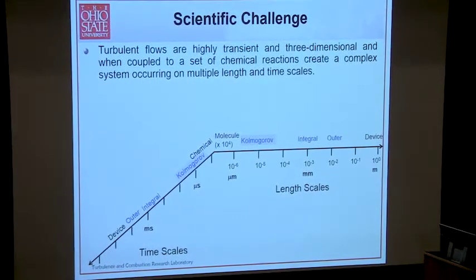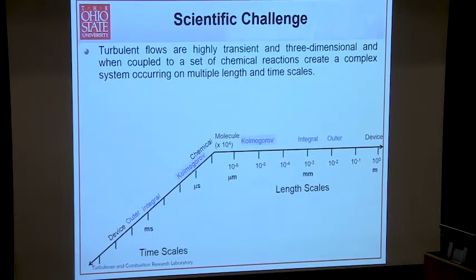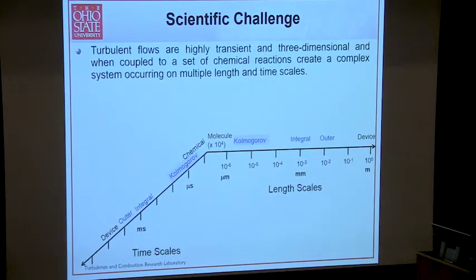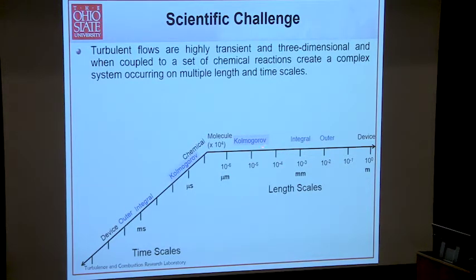In turbulent flows there are more challenges. Turbulent flows are highly transient and three-dimensional. When we couple them to a set of chemical reactions, we create a very complex system occurring on multiple length and time scales. From the fluid mechanics point of view, we have the outer scales — where energy is extracted from the mean flow and input into the turbulence — the largest integral scales, all the way down to the smallest Kolmogorov scales. We may have a factor of a thousand between the largest and smallest length scales, and the exact same thing for the time scales — a large dynamic range.